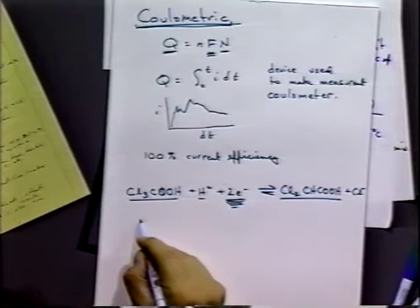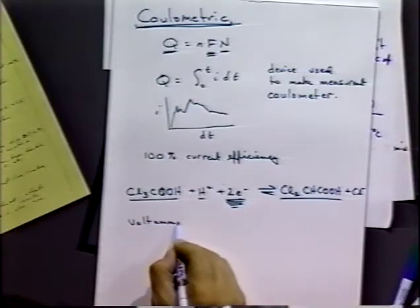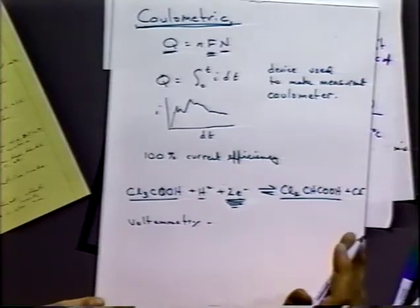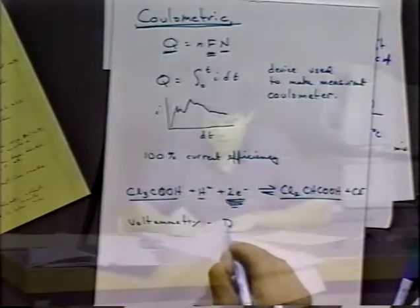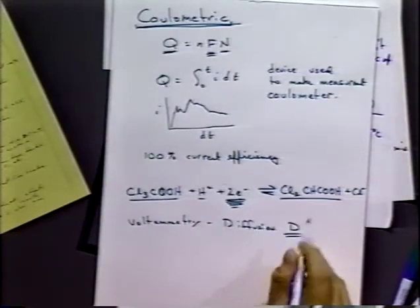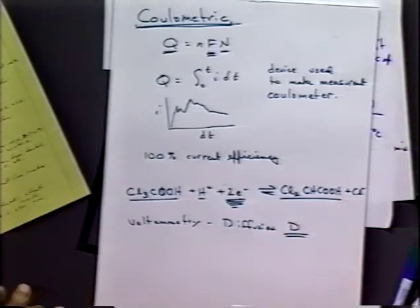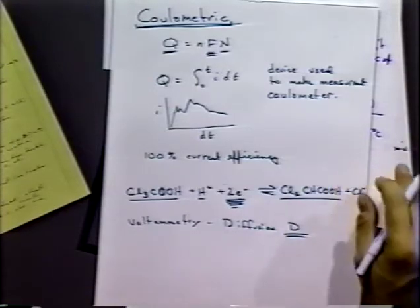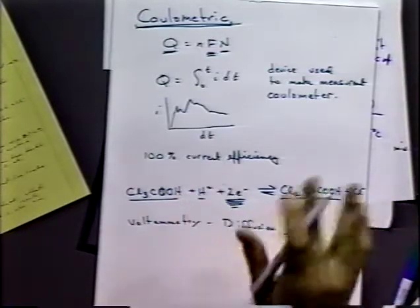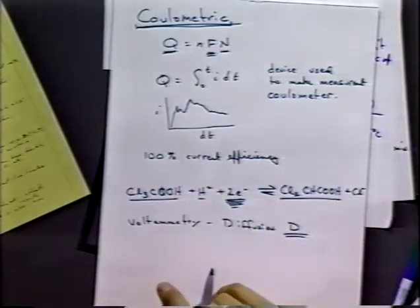The problem that coulometry addresses is that unlike voltammetry, particularly for diffusion-type processes, we need to know the diffusion coefficient all the time. The diffusion coefficient is not always tabulated in books or available for a particular system. Coulometric methods don't have a diffusion coefficient in them, so we don't have to worry about that.